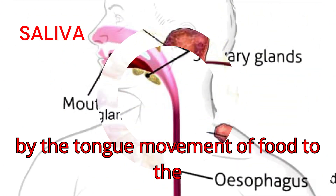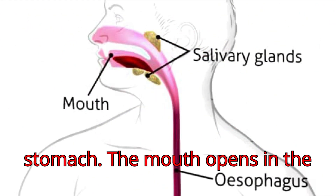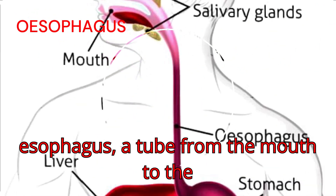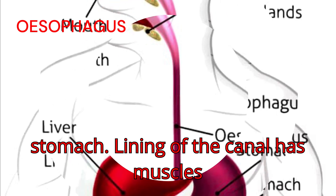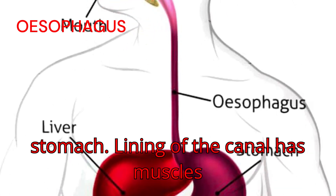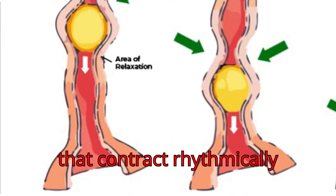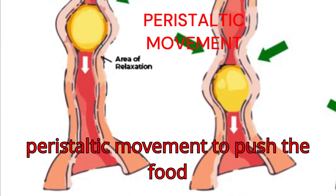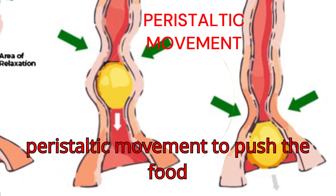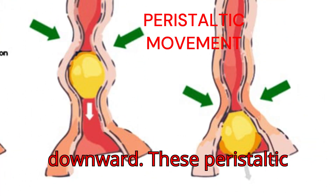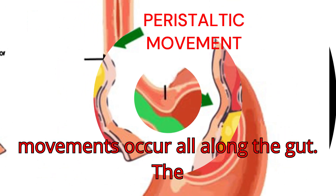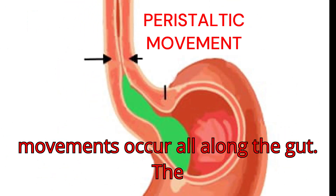Movement of food to the stomach: the mouth opens into the esophagus, a tube from the mouth to the stomach. The lining of the canal has muscles that contract rhythmically — peristaltic movement — to push the food downward. These peristaltic movements occur all along the gut.